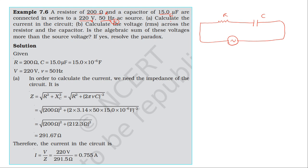For the first part, calculate the current in the circuit. According to Ohm's law, the potential difference equals current times total impedance of the circuit. The impedance of the circuit is equal to the square root of R squared plus Xc squared, where Xc is the capacitive reactance.